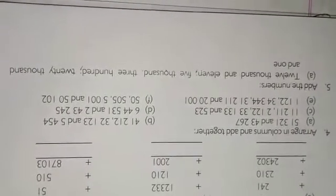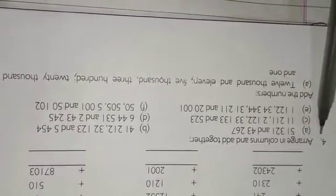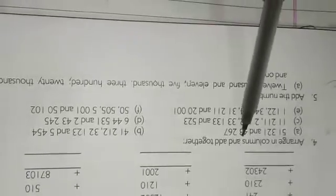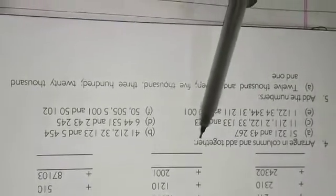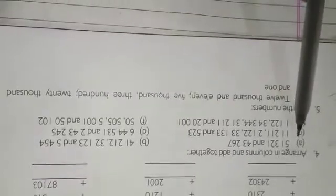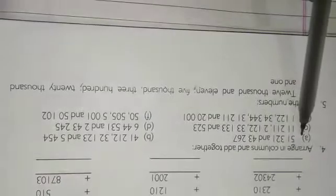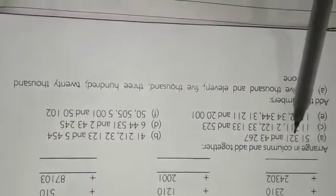Today we will see question number 4. Arrange in columns and add together. Children, see the question number A. How we arrange in their place value and add?